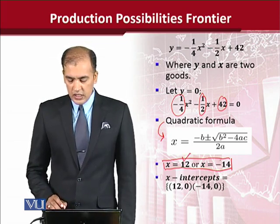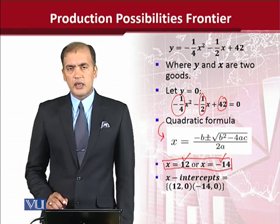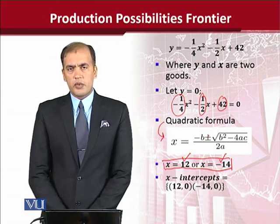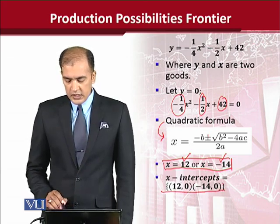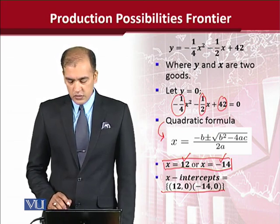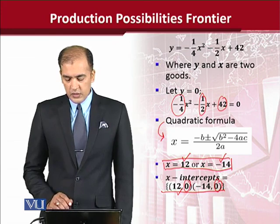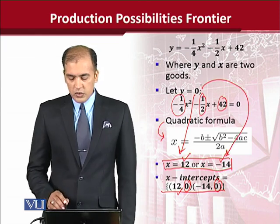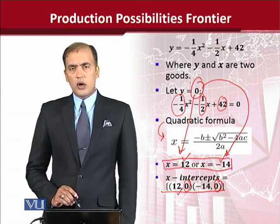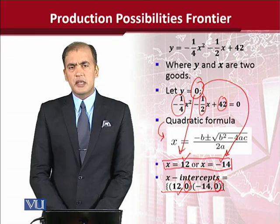One value of x is 12 and the other is -14. We can write these values in ordered pair form. The solution set contains two ordered pairs where y appears as 0 in both, because these two values were generated while assuming y was equal to 0. These two points are the x-intercepts.